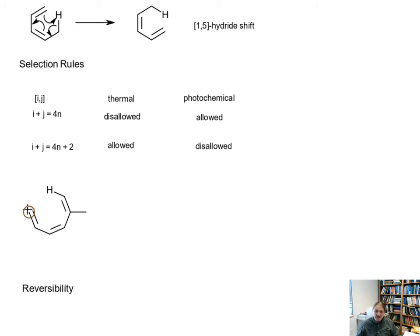A 1-7 situation like this. This reaction requires light. So this is a 1-7 hydride shift. It's allowed under photochemical conditions, so if we want this to happen, we have to get UV light. But otherwise, it's going to happen as we go around the ring.